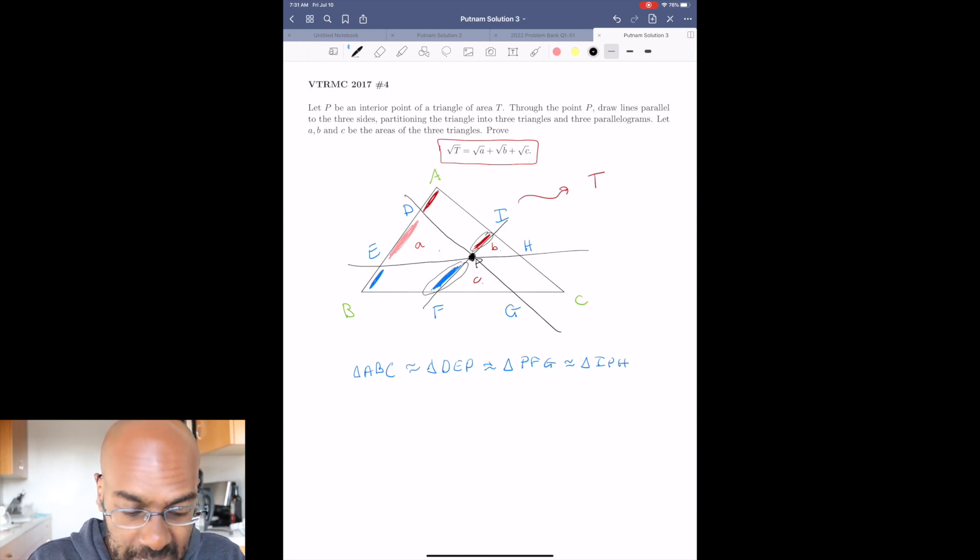So we've dissected AB into three pieces, each of which use side lengths of the three triangles that are interior here, and also they're all the same side in the similarity involved. So we have the side DE, and then we have PF, and IP.